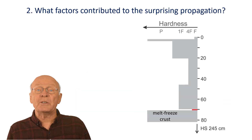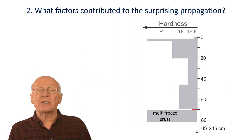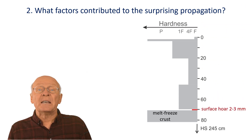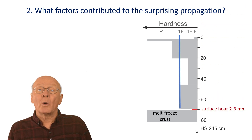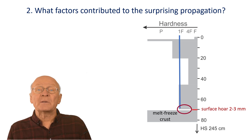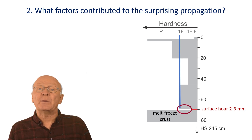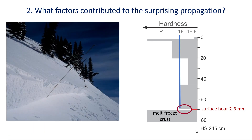To answer question two from the case study, factors that contributed to the propagation that surprised these skiers include: first, the slab was 70 centimeters thick, and 40 centimeters of the slab was at least medium or one-finger hard; second, there was a substantial difference in hardness between the lower slab and the surface oar layer. Now that we know more about these factors from a thick snowpack, a 160-meter-wide propagation should not be surprising.